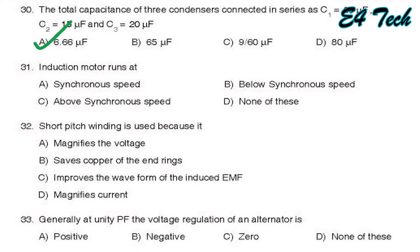Next, short pitch winding is used because it magnifies the voltage, saves copper of the end rings, improves the waveform of the induced EMF, magnifies the current. Short pitch winding is used in order to save the copper at the end rings. That is option B.